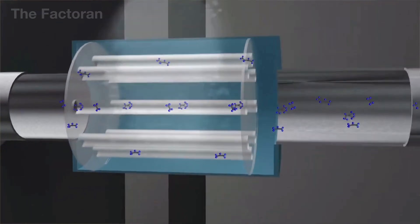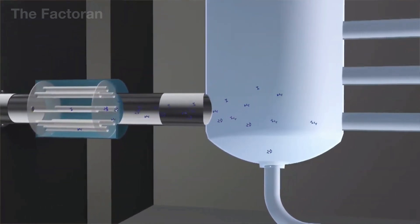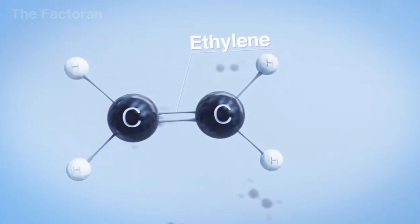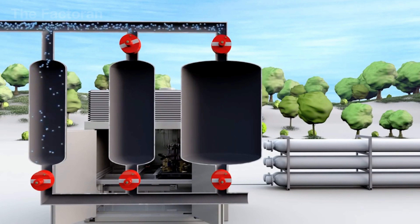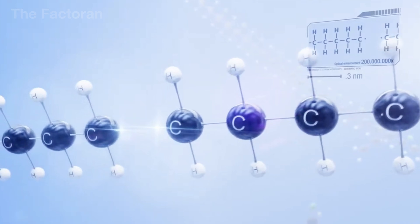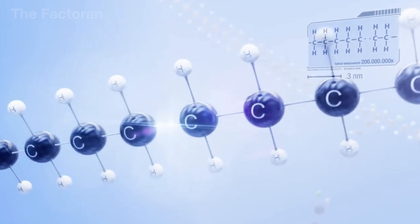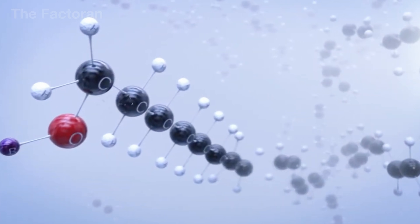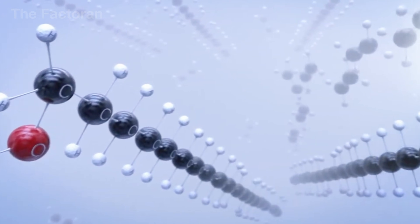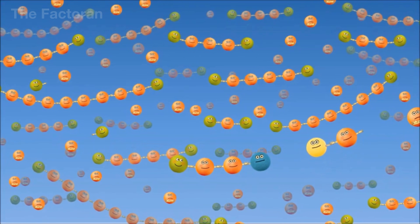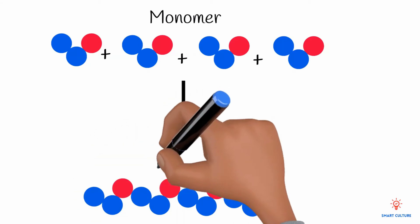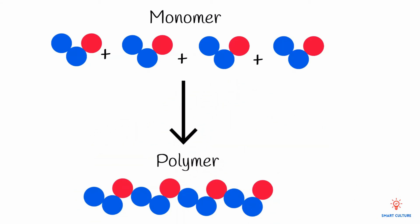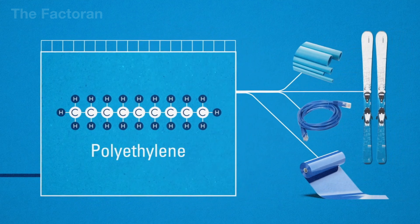Once the polymer chains reach the desired structure, the reaction is halted immediately to preserve the material's properties. The reaction stream is deliberately stopped by lowering temperature, reducing pressure, or deactivating the catalyst. At this stage, HDPE polymer remains in an activated state and is highly sensitive to oxygen and heat. To prevent premature degradation, thermal stabilizers and antioxidants are added directly into the material.